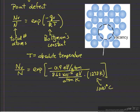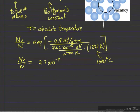And the units here cancel, so we're going to get a number which will be the fraction. So this is the fraction of copper atoms that are vacancies at a thousand degrees C. You can see it's a small number.